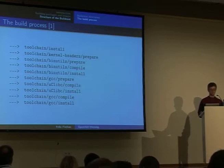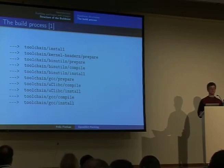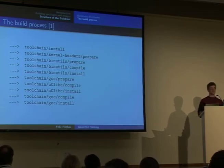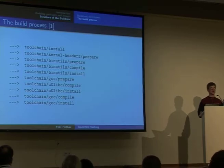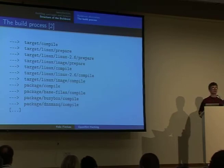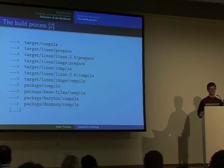After generating the initial GCC, it starts compiling and installing the C library. After that, when it has generated the C library, it will build the final compiler. This is a necessary step in the toolchain building process because if you don't have binaries of the dynamic loader and linker ready, then the compiler cannot be created to target the actual C library.